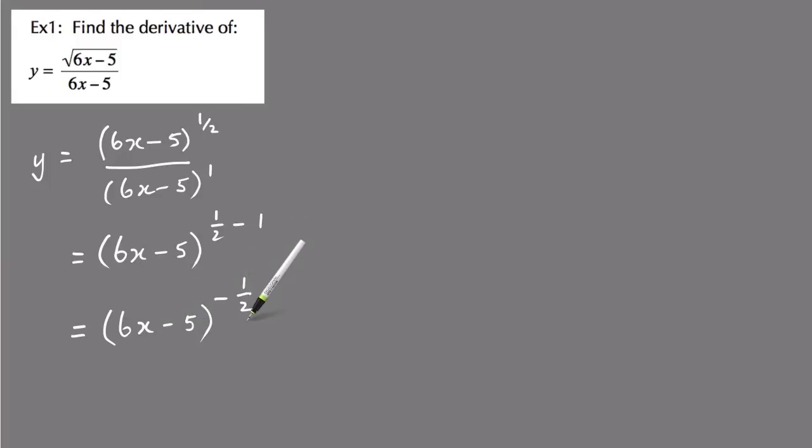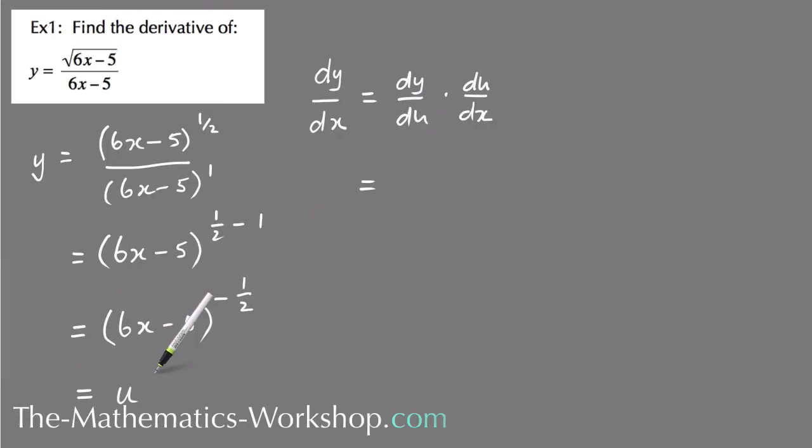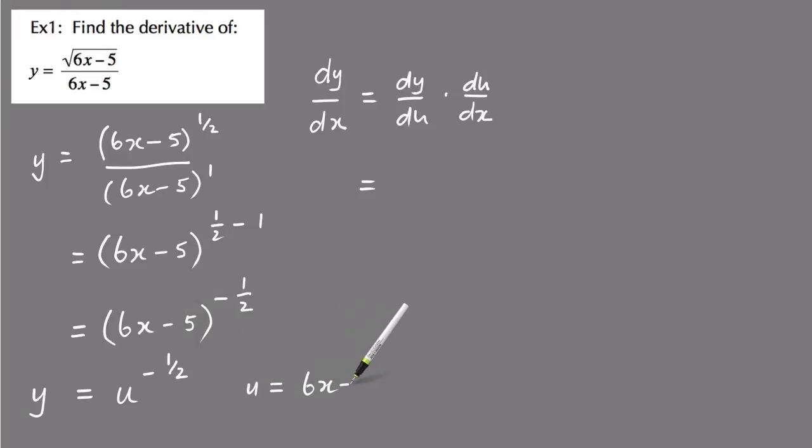And now you can easily derive that, and to do that you need to use the chain rule, so I'm going to do it dy dx equals dy du times du dx, and letting u equal this thing here, so that becomes u to the minus 1 half. And so y equals u to the minus 1 half, where u equals 6x minus 5.